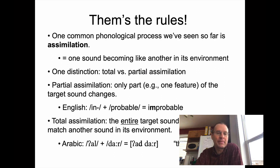We saw total assimilation a while back when we were looking at the Arabic sun and moon letters. In this case, we have the entire target sound changing to match another sound in its environment. When al attaches to dar, the l at the end of al becomes a d to match the d at the beginning of the root or the word house. That's total assimilation. It can happen both ways.